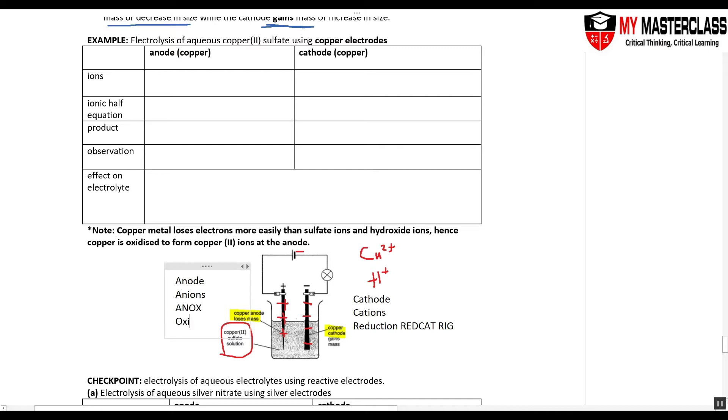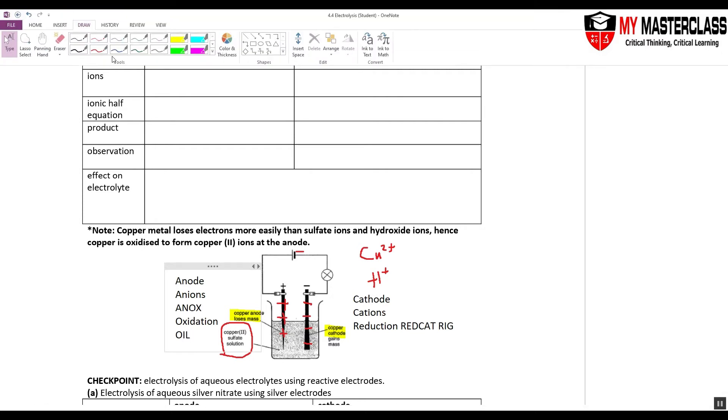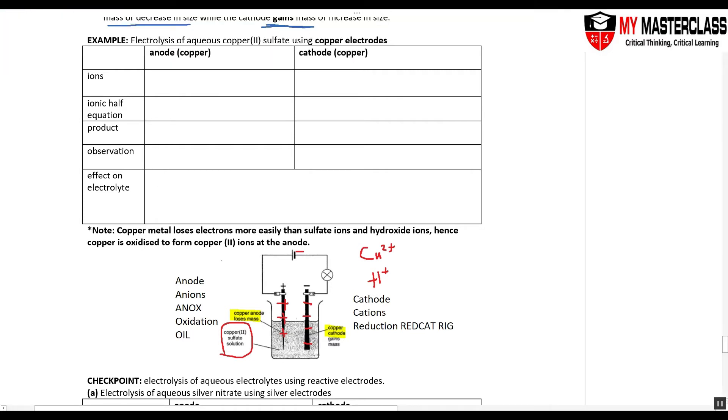Oxidation. Oxidation is lose. So what are the anions that get attracted? Your SO4 2- and your OH-.